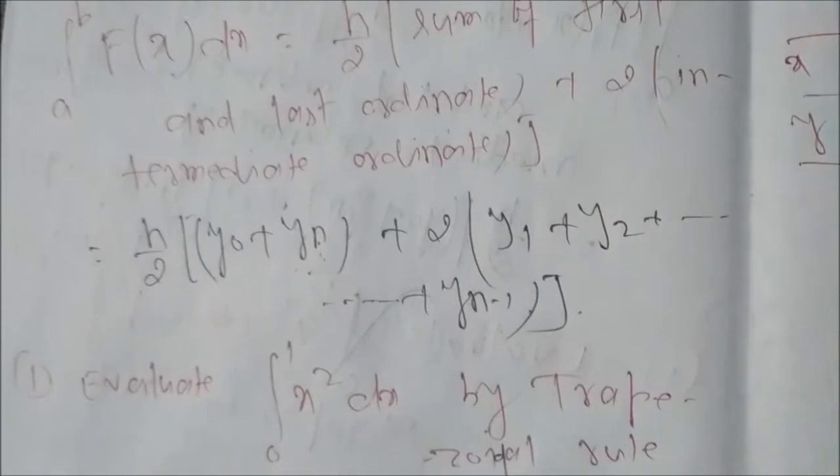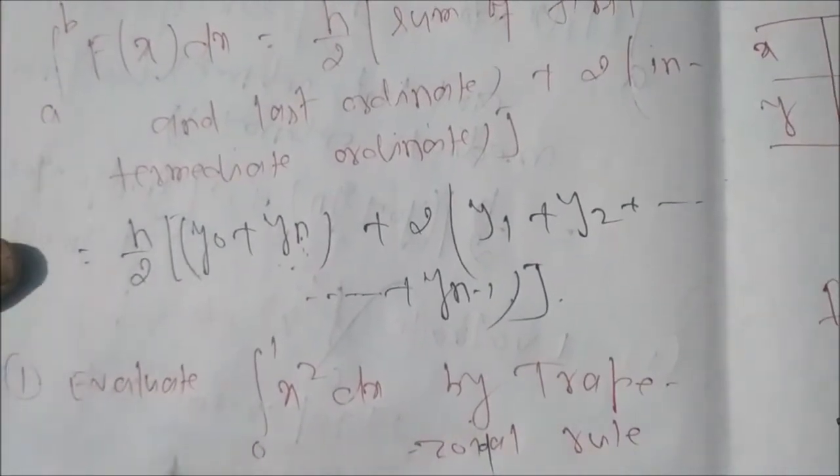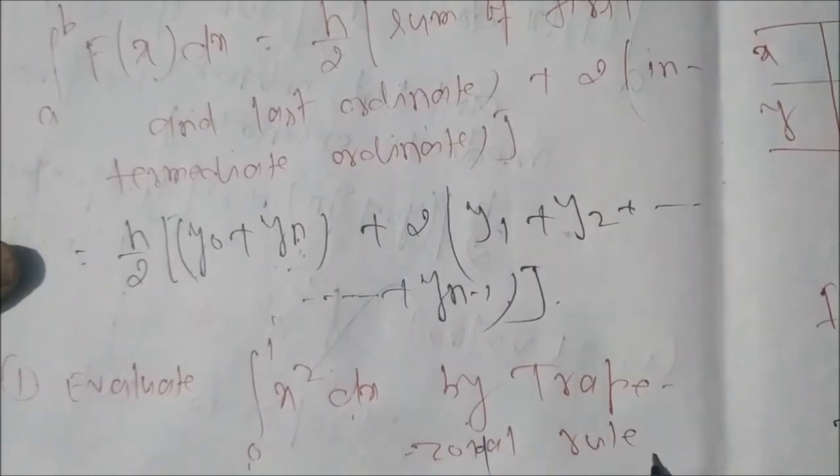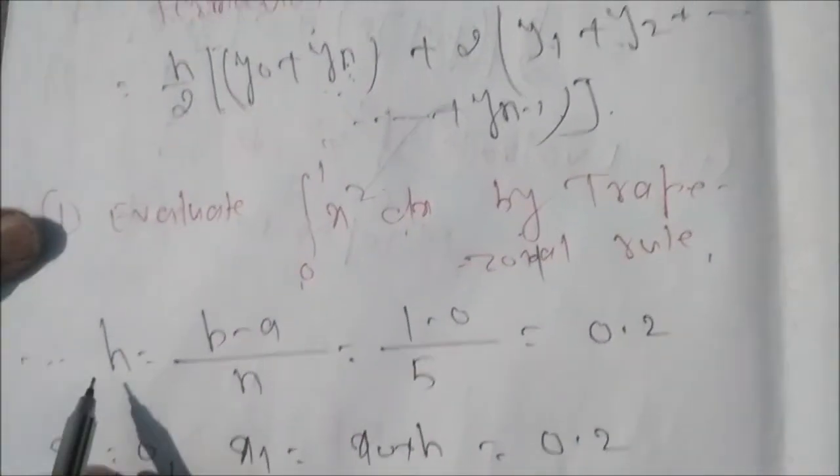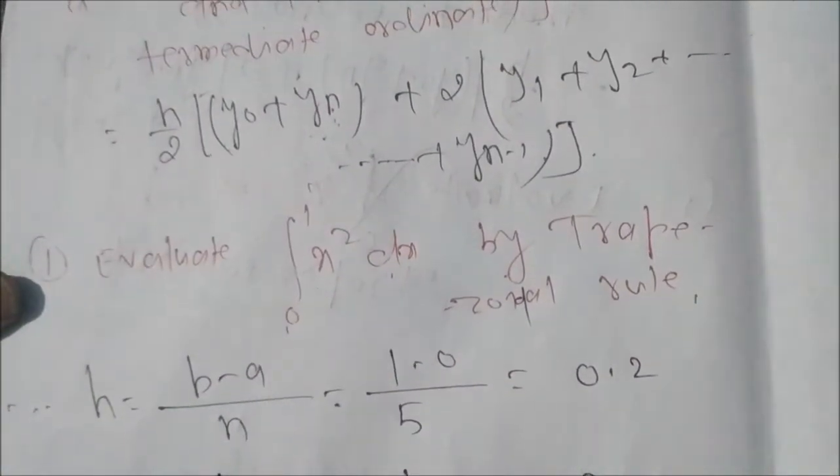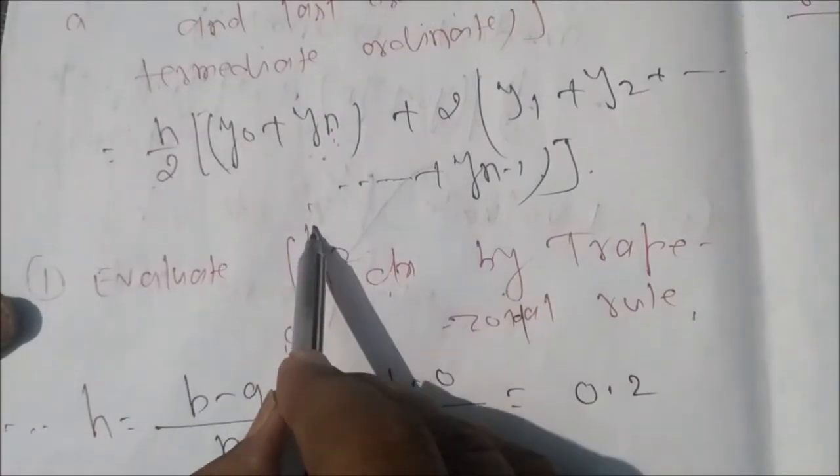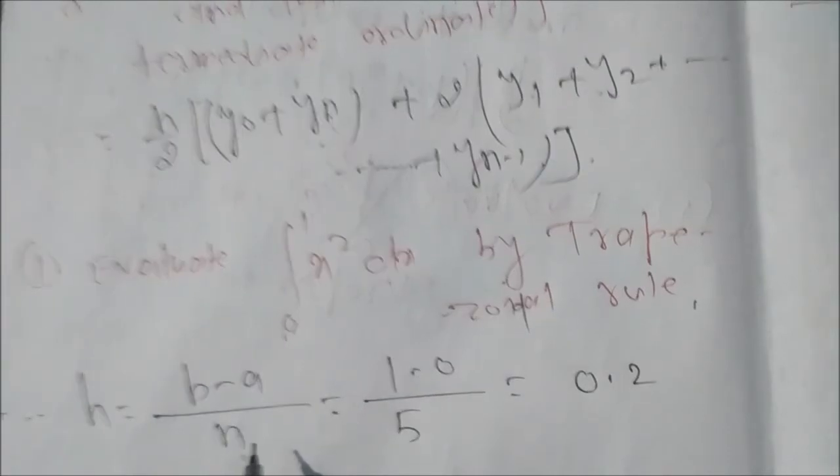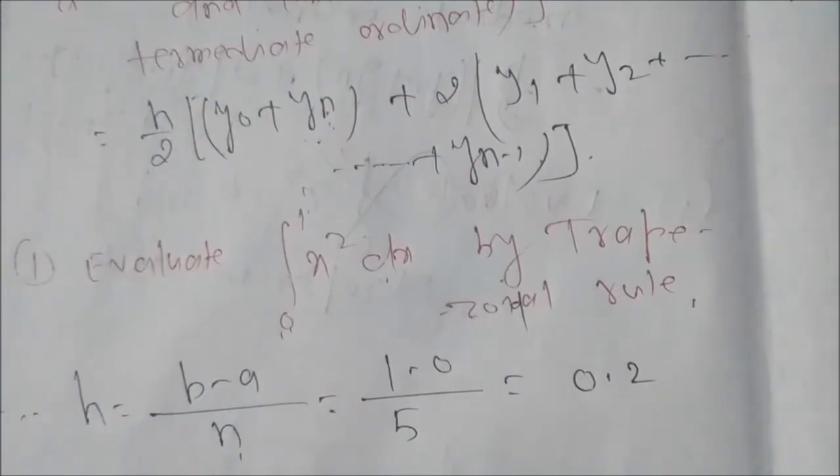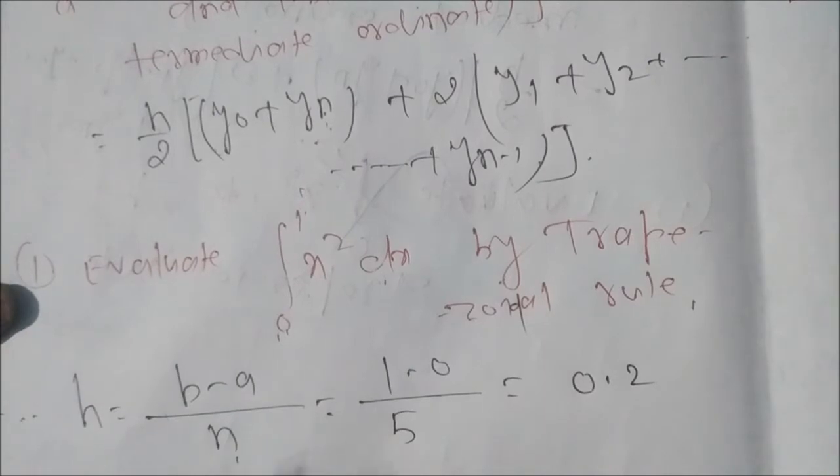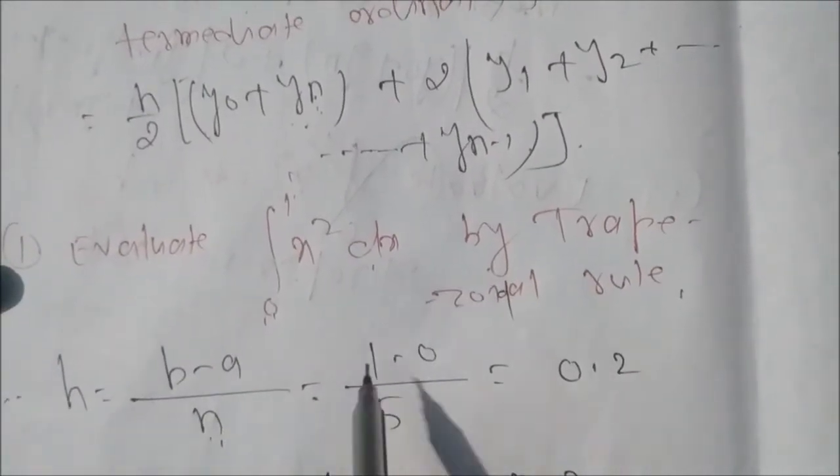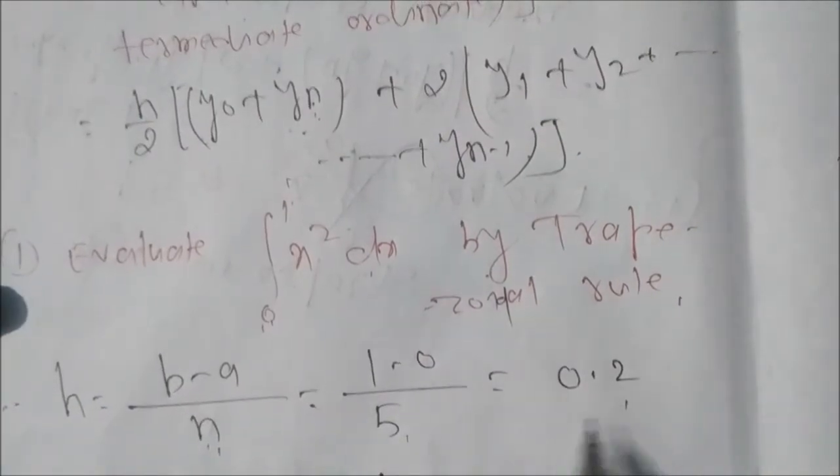Now we are going to give simple example: evaluate integration 0 to 1 x square dx by trapezoidal rule. First of all you find h. h is defined as h equal to b minus a by n, where b is upper limit, a is lower limit. n may be anything, that is called division either even or odd. Here we take n equal to 5, that is h equal to 1 minus 0 by 5 equal to 0.2.